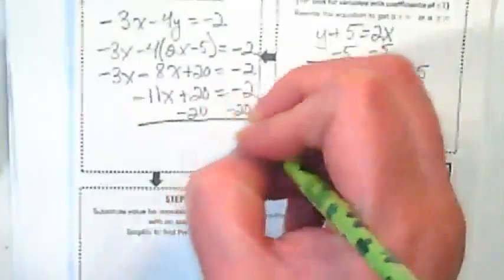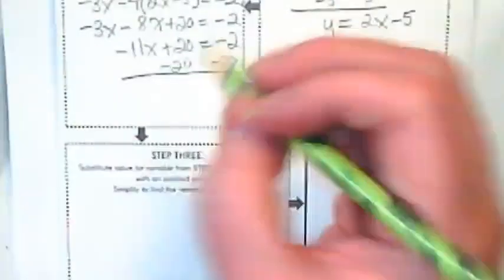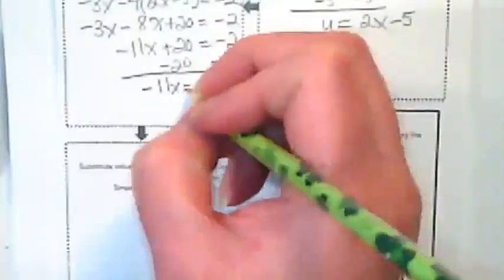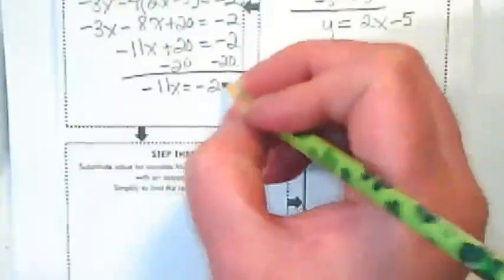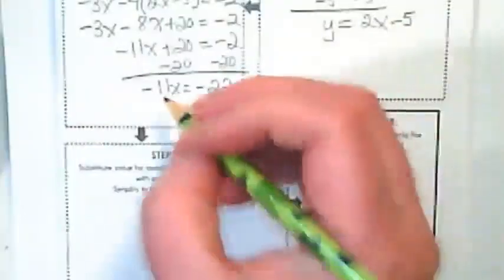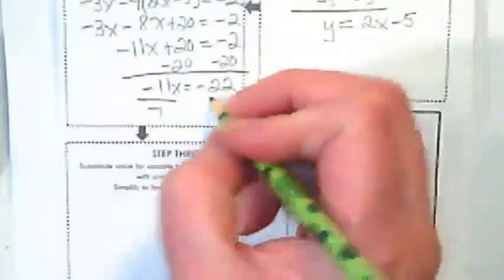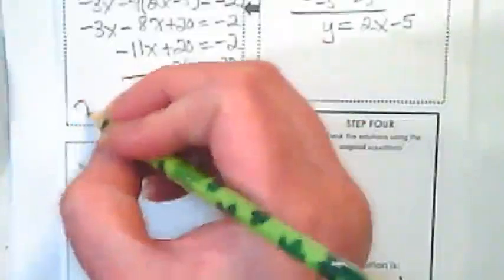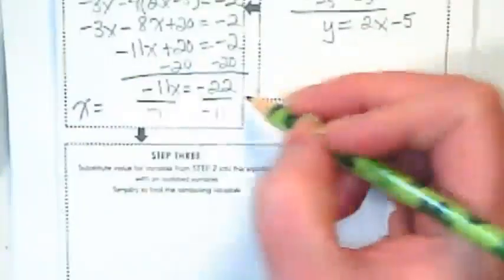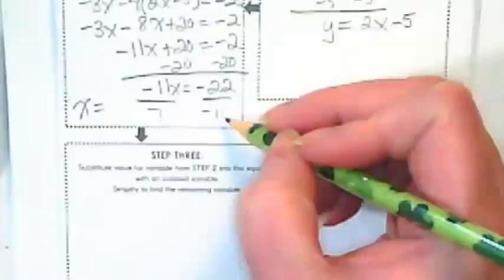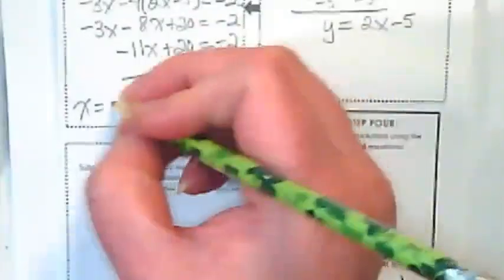Subtract 20 from both sides with an 11 there. What are we hoping happens? We want something divisible by 11, and we get negative 22. And x equals negative 22 divided by negative 11 is positive 2.